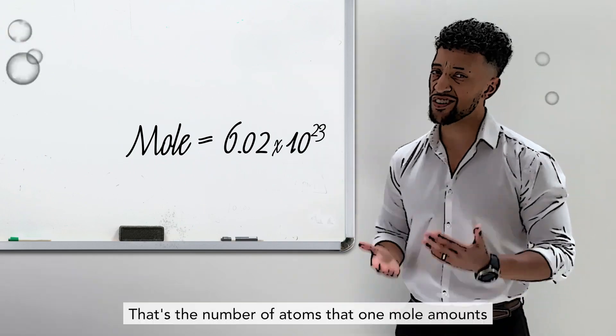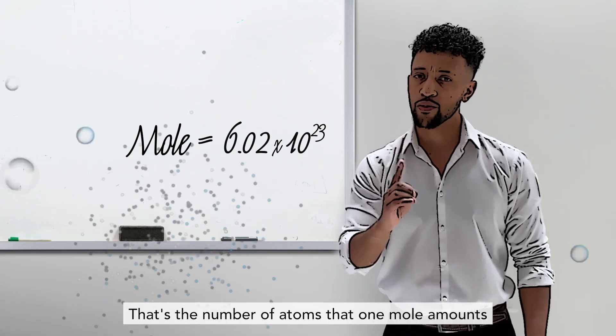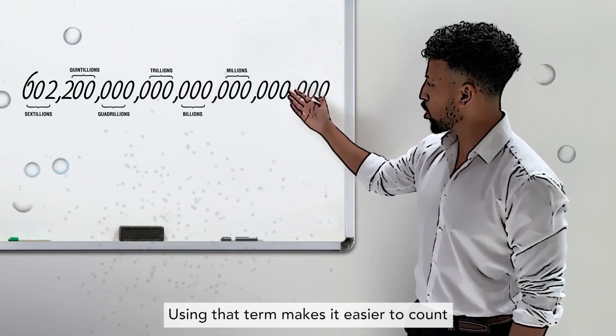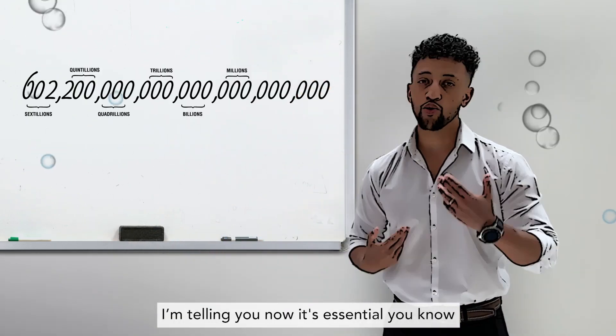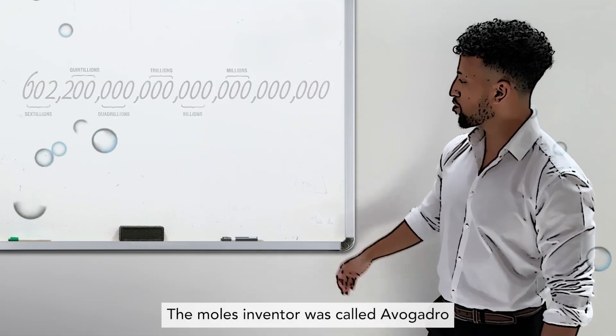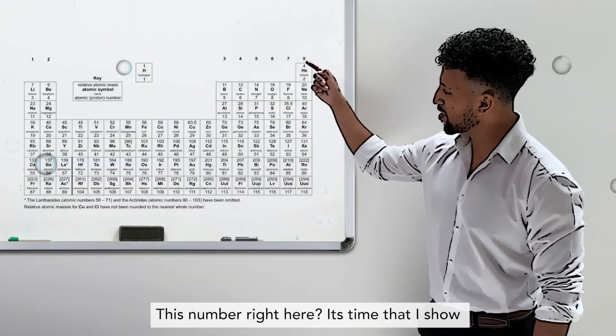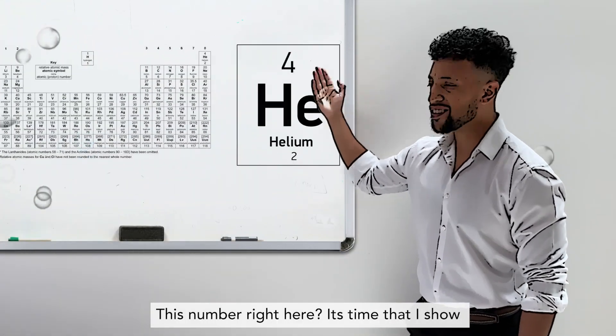Now the number is huge. I'll tell you right now what it's meant to be: six times ten to the twenty-three. That's the number of atoms that one mole amounts. Using this term makes it easier to count. It's essential, you know — the mole's inventor was called Avogadro.